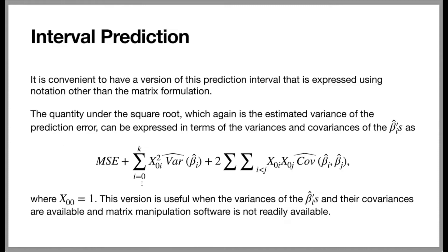The estimated variance equals the MSE plus the sum, i going from 0 up to k (where k is the number of predictor variables), of x sub 0 i squared times the estimated variance of beta sub i hat, plus two times the double summation where i is strictly less than j, of x sub 0 i times x sub 0 j times the estimated covariance of beta i hat and beta j hat. In this formula, x sub 0 0 is equal to 1 — that's the quantity multiplied against the intercept. This version is useful when the variances and covariances of the beta hats are available but matrix manipulation software is not readily available.